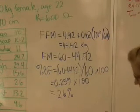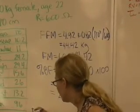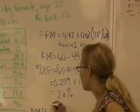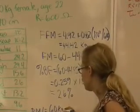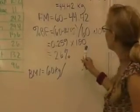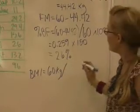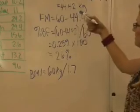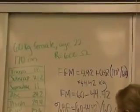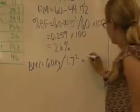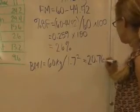For her BMI, BMI equals total body mass, 60 kilograms, divided by the height squared in meters. So, her height in meters would be 1.7, 170 divided by 100 squared. And this equals 20.76.